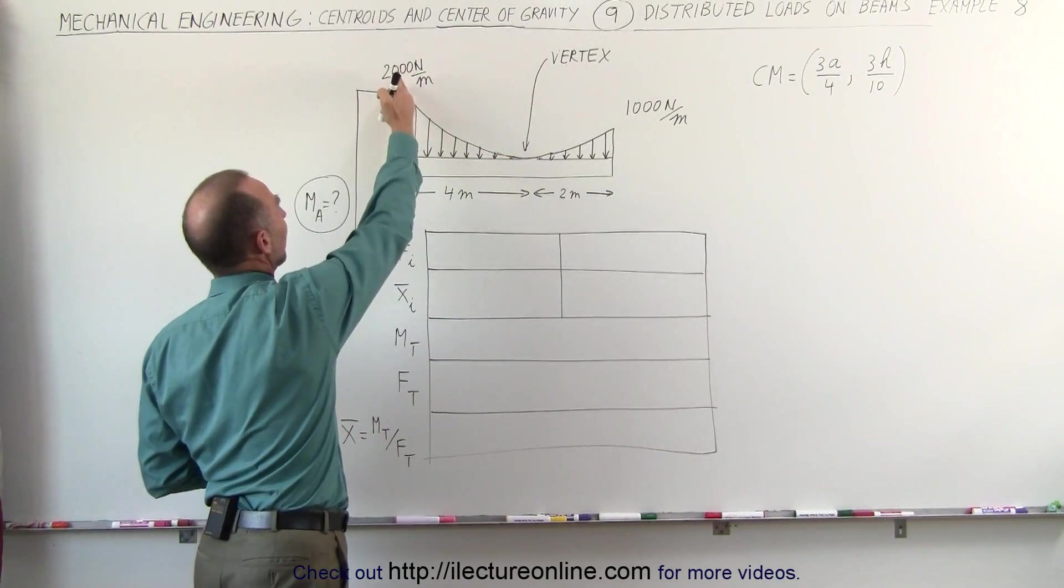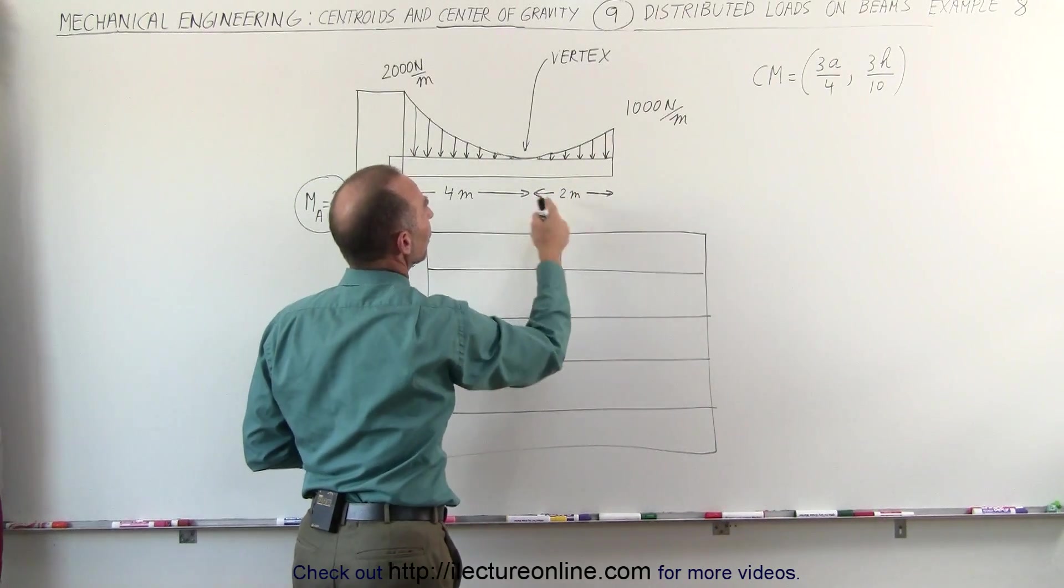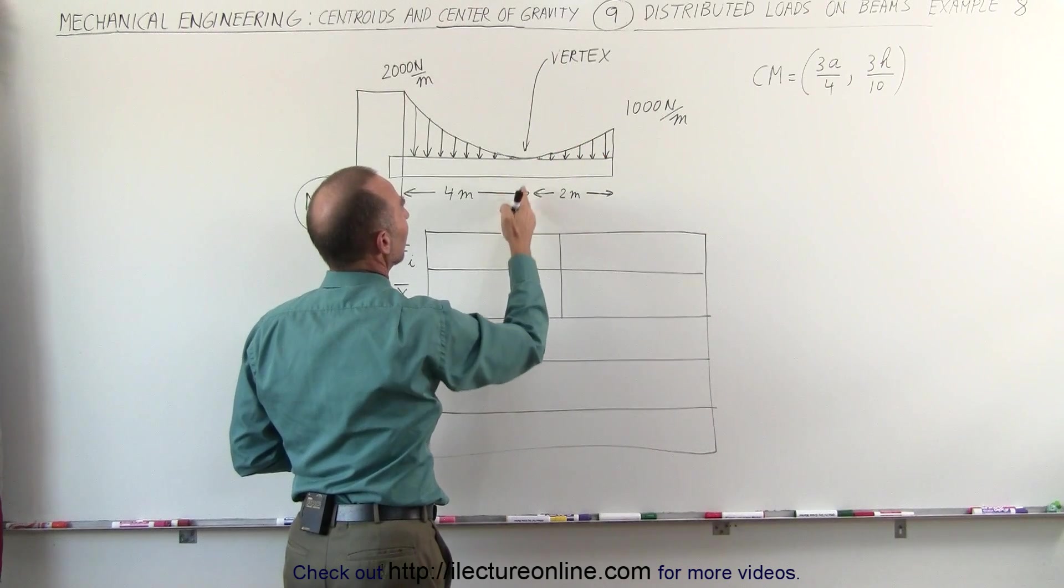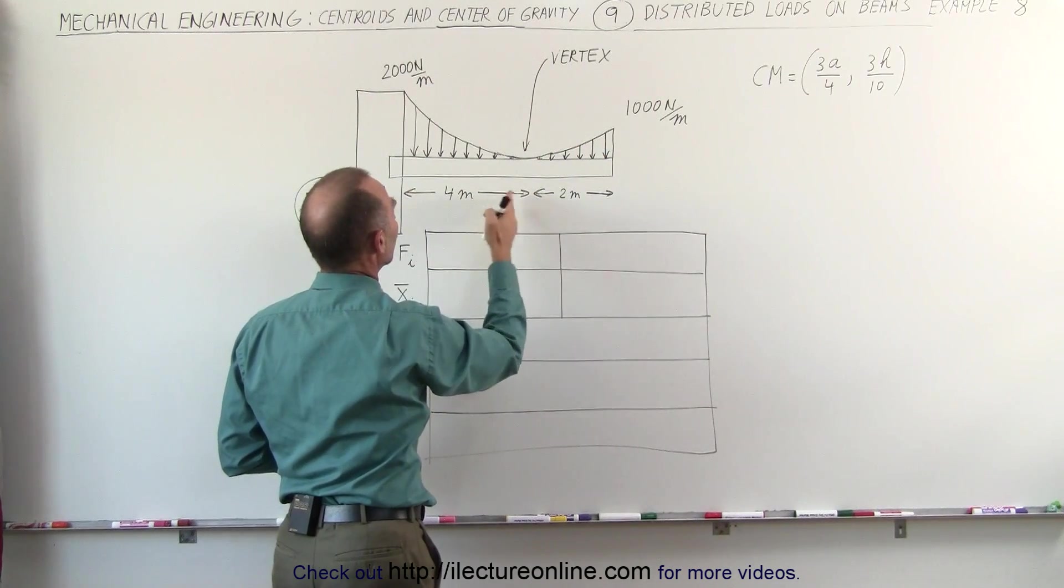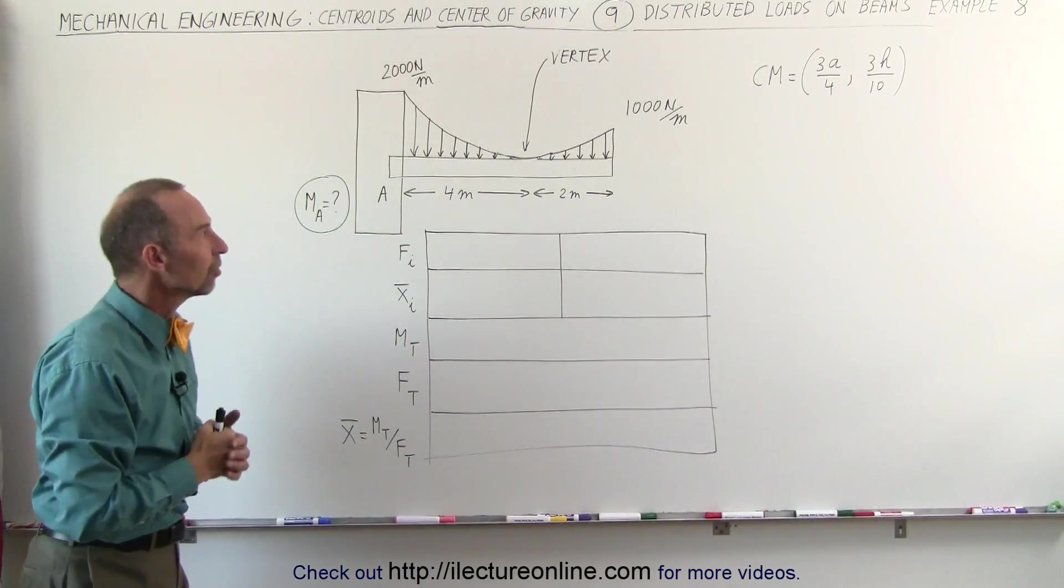On the left it has a maximum value of 2000 N per meter, on the right 1000 N per meter. Notice that the vertex of the parabolic shape is at a point 4 meters to the right of A and 2 meters from the very end of the beam. The beam is 6 meters long.